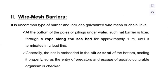The second type is a wire mesh barrier, which is not common. At the bottom, poles are placed underwater and the net barrier is fixed through a rope along the seabed for approximately one meter until it terminates in a lead line. Generally the net is embedded in the silt or sand of the bottom, sealing it properly so that entry of predators and escape of culturable aquatic organisms can be checked. Here is an example of a wire mesh barrier that can be used for construction of a pen.